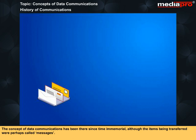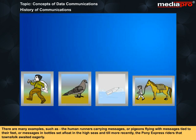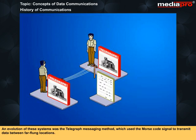The concept of data communications has been there since time immemorial, although the items being transferred were perhaps called messages. There are many examples, such as human runners carrying messages, pigeons flying with messages tied to their feet, messages in bottles set afloat in the high seas, and the Pony Express riders that townsfolk awaited eagerly. An evolution of these systems was the telegraph messaging method, which used the Morse code signal to transmit data between far-flung locations.